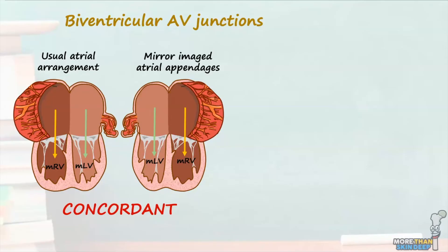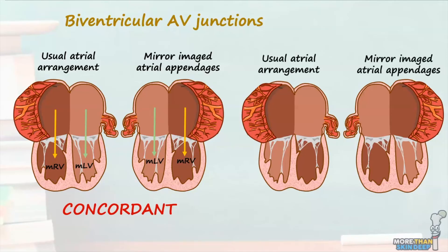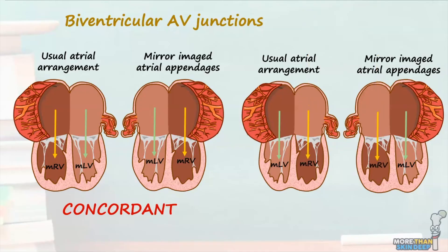In the second type of biventricular AV junctions, we see that like in the first group, one heart possesses usual atrial arrangement and the second heart has mirror-image atrial appendages. What makes this group different to concordant AV connections is that now in both hearts, the morphologically right atria are connected to the morphologically left ventricles and the morphologically left atria are connected to the morphologically right ventricles. As each atrium is now connected to its incorrect underlying ventricle, we call this group as having discordant atrioventricular connections.